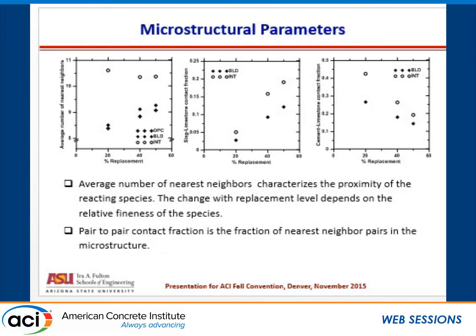Similarly, for the cement-limestone contact fraction, as you increase the replacement level you are effectively decreasing the amount of cement in the system, and that's why the cement-limestone contact fraction goes down. However, the interground systems still have a higher contact fraction as compared to the blended ones.